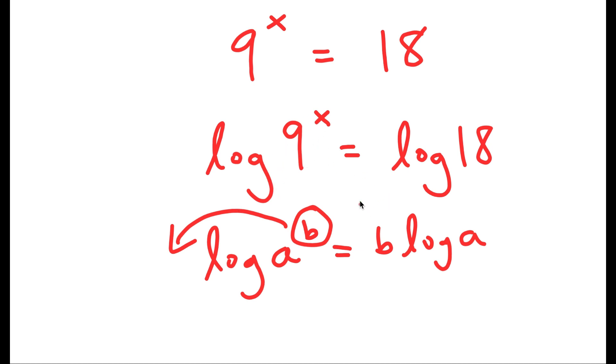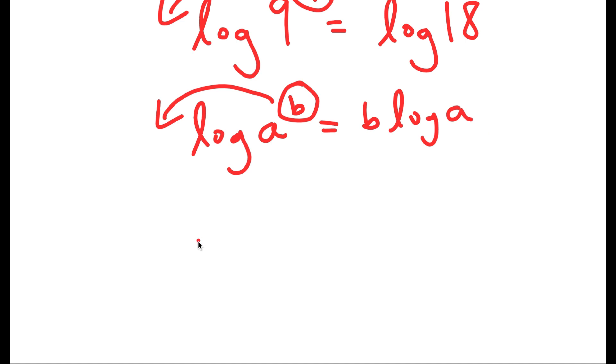So this property is exactly what I'm going to use for log of 9 to the power of x. So I'm going to move x to the front over here. So I get x times log 9 is equal to log 18.